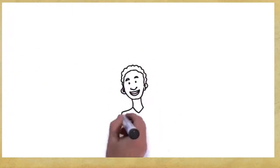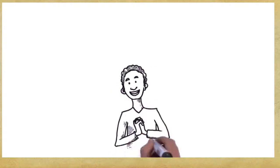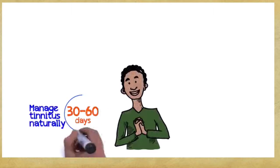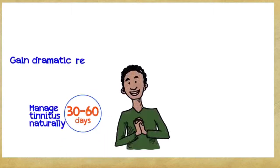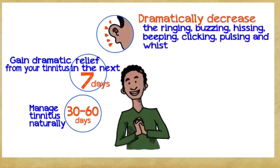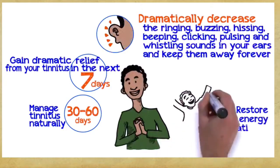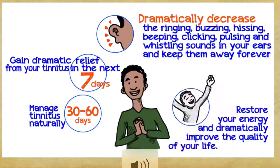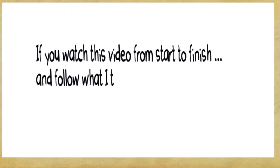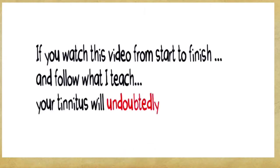What can you gain if you embrace these three easy principles? You can manage tinnitus naturally within 30 to 60 days, gain dramatic relief within the next seven days, dramatically decrease the ringing, buzzing, hissing, beeping, clicking, pulsing, and whistling sounds in your ears and keep them away forever. Restore your energy and dramatically improve the quality of your life, guaranteed. If you watch this video from start to finish and follow what I teach, your tinnitus will undoubtedly start to fade away.